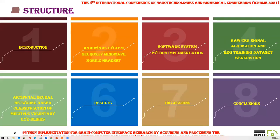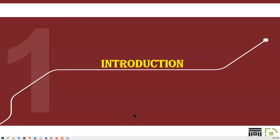The structure of this presentation is: 1. Introduction. 2. Hardware System. 3. Software System Python Implementation. 4. Raw EEG Acquisition and EEG Training Data Set Generation. 5. Artificial Neural Networks Based Classification of Multiple Voluntary Eye Blinks. 6. Results. 7. Discussions. 8. Introduction.